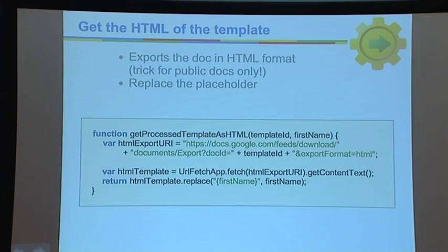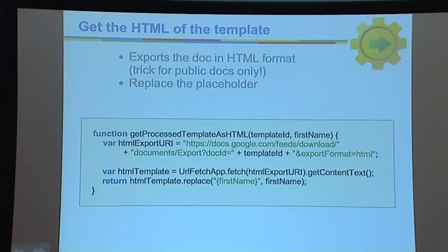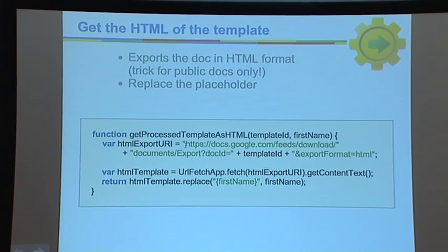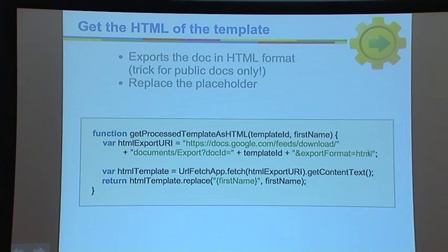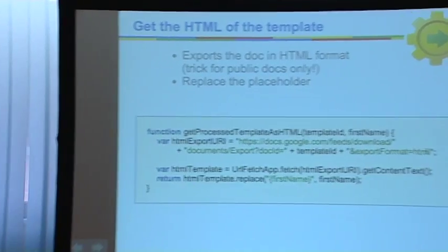To get the Google Doc as HTML, it only works if your Google Doc is set to public. I use the URL fetch API to construct a URL with slash download, documents, export, and select the HTML export format. You can also get PDF, but for PDF there's a built-in API inside Apps Script where you can just call getAsPDF directly. I need HTML here because I want the email body to be the newsletter content.